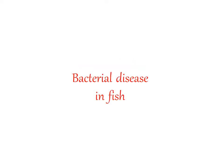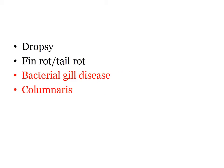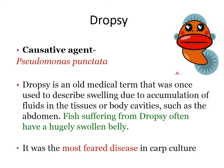Fish disease: bacterial disease in fish. The four bacterial diseases found in fish are dropsy, fin rot or tail rot, bacterial gill disease, and columnaris. The causative agent of dropsy is Yersinia ruckeri.